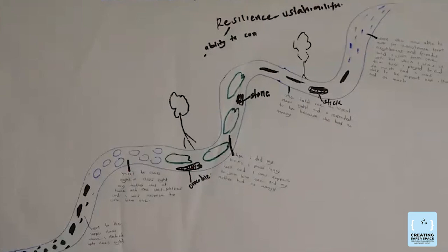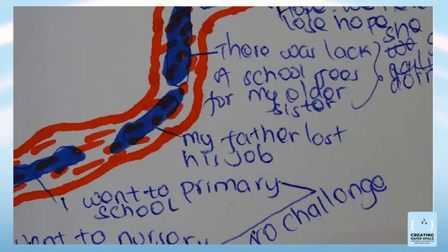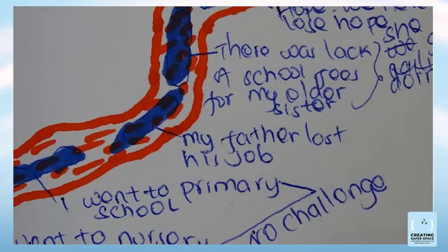Another river of life from someone else describes going to primary school, with the father losing his job. From the time this person was young up through primary school, they say they had no challenges and moved on — until there was a lack of school fees. We explore how that affected their life. The data shows the person eventually lost hope and got into criminal activities, which provides rich information for analysis.